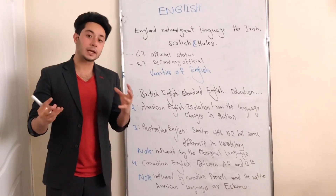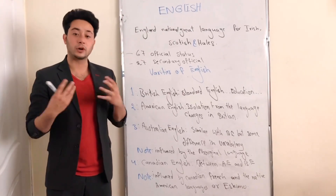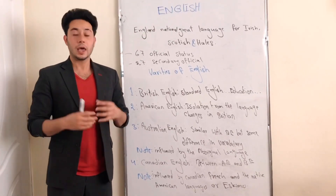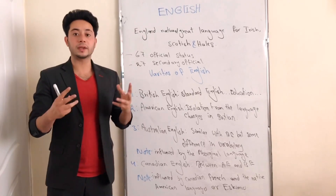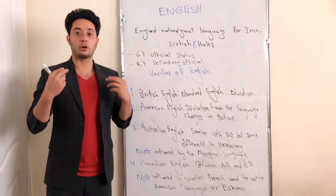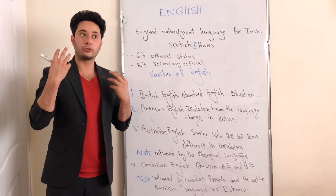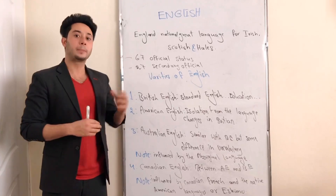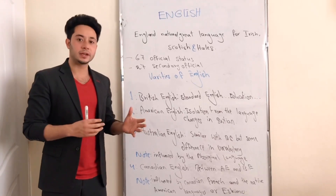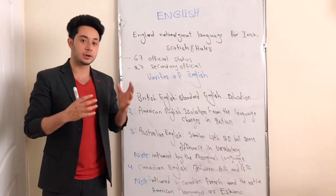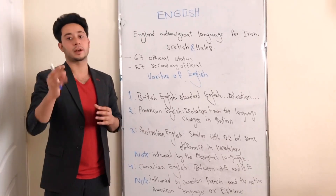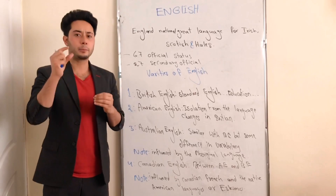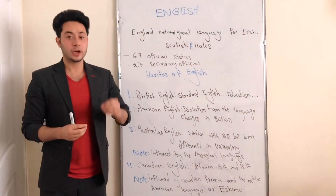Now it is time to talk about varieties of English. What are the types of English language? In general, we can say that there are 4 different types of English language, which are called British English, American English, Australian English, and also Canadian English. Let's have brief details about these kinds of English.